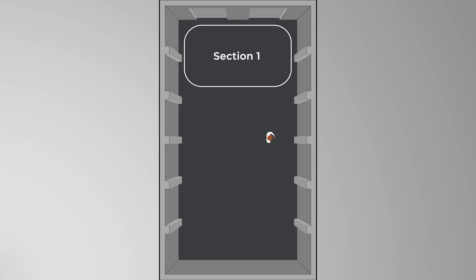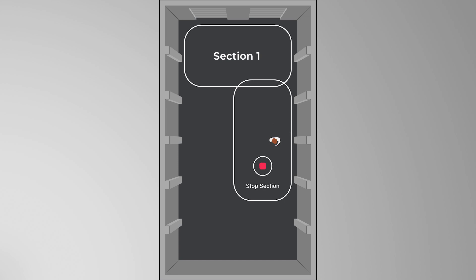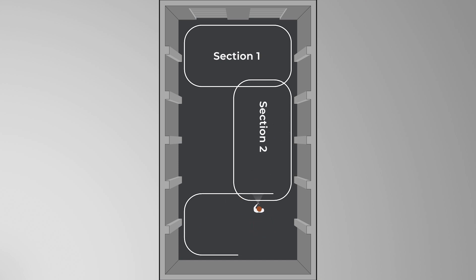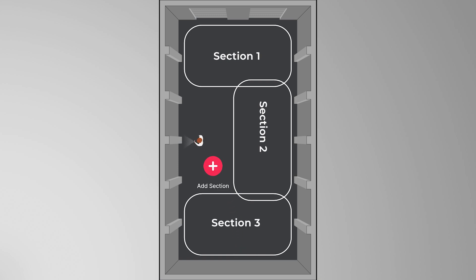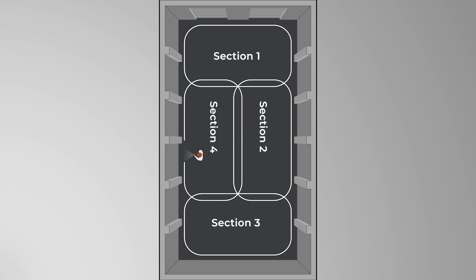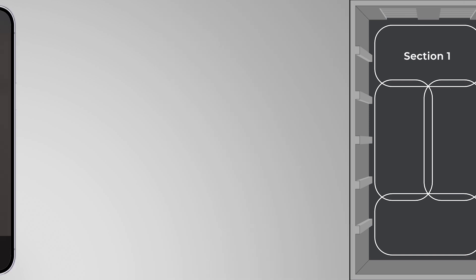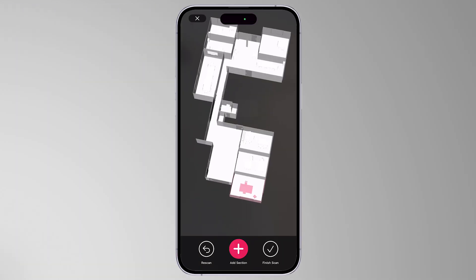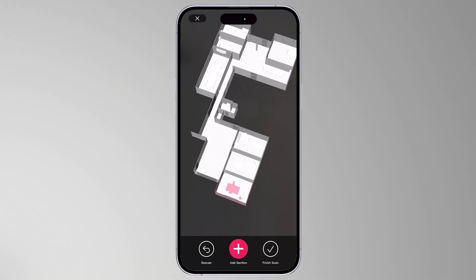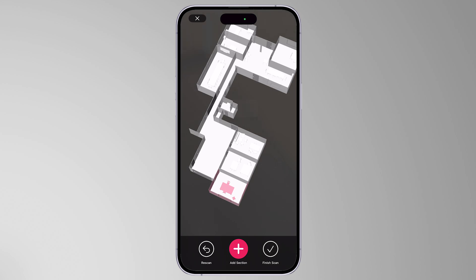Capturing larger areas is possible by combining multiple sections covering the whole area. You can also capture multiple floors by adding more sections to your scan. This way, you can capture even whole buildings. By now, you should have a comprehensive model of your scanned environment, so it's time to finish your scan.